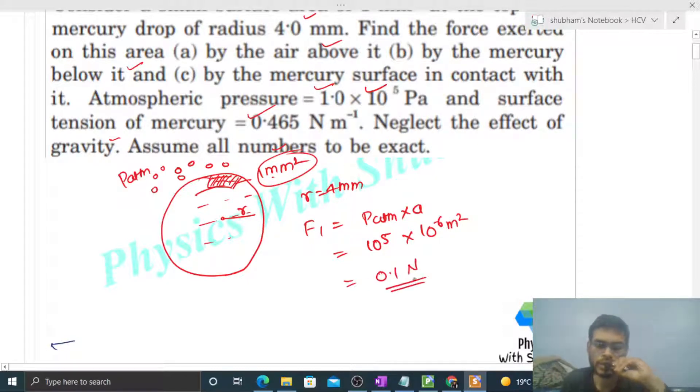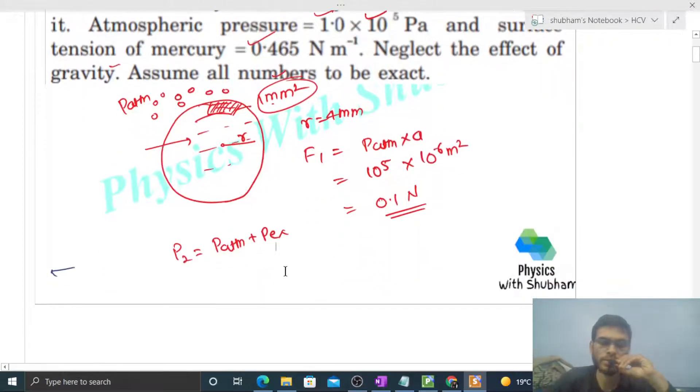Let's check part B - mercury below it. So what will be the value of pressure inside this drop? That will be let's say P2. P2 will be atmospheric pressure plus excess pressure in a drop, that is 2T divided by R, plus atmospheric pressure.